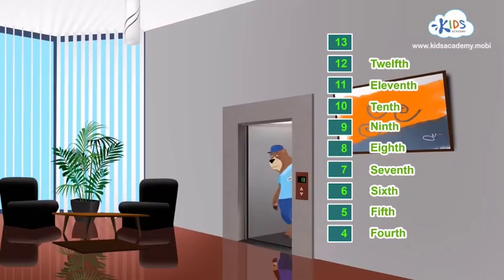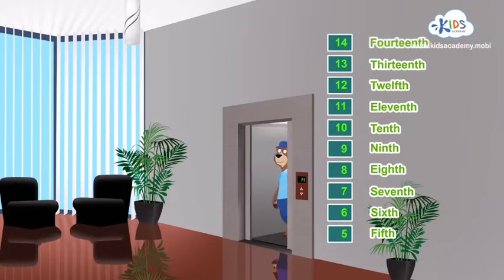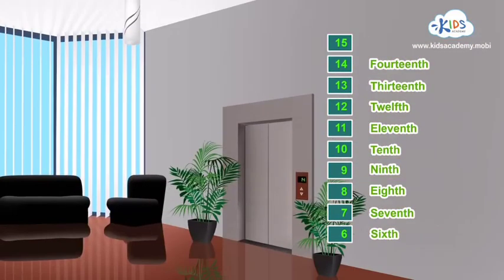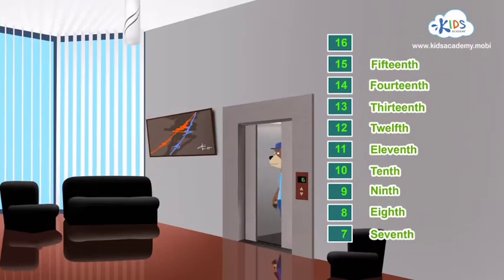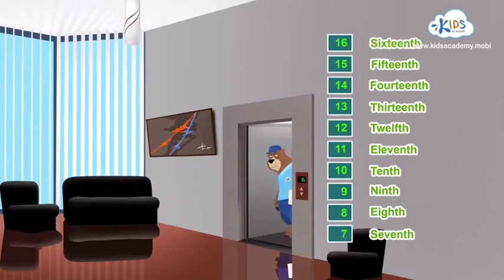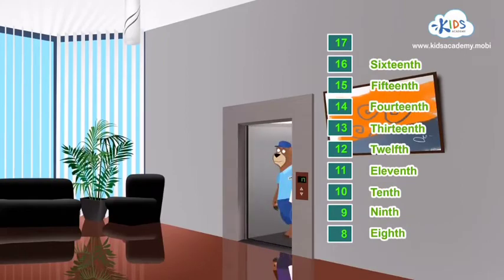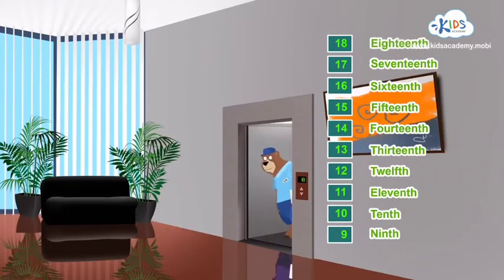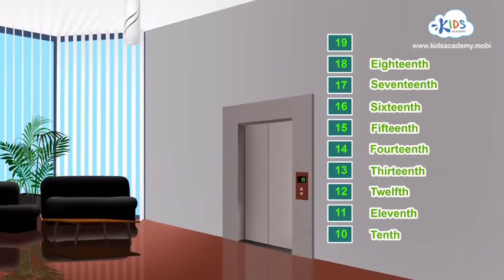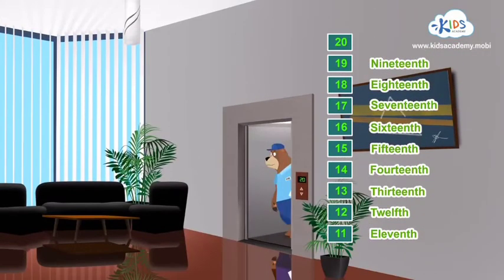Which floor are we on now? Right, it's the thirteenth floor. Fourteen — the fourteenth floor. Fifteen — the fifteenth. Sixteen — the sixteenth floor. Maybe this is the twentieth floor? No, it's the seventeenth. Eighteen — the eighteenth floor. Nineteen — the nineteenth.